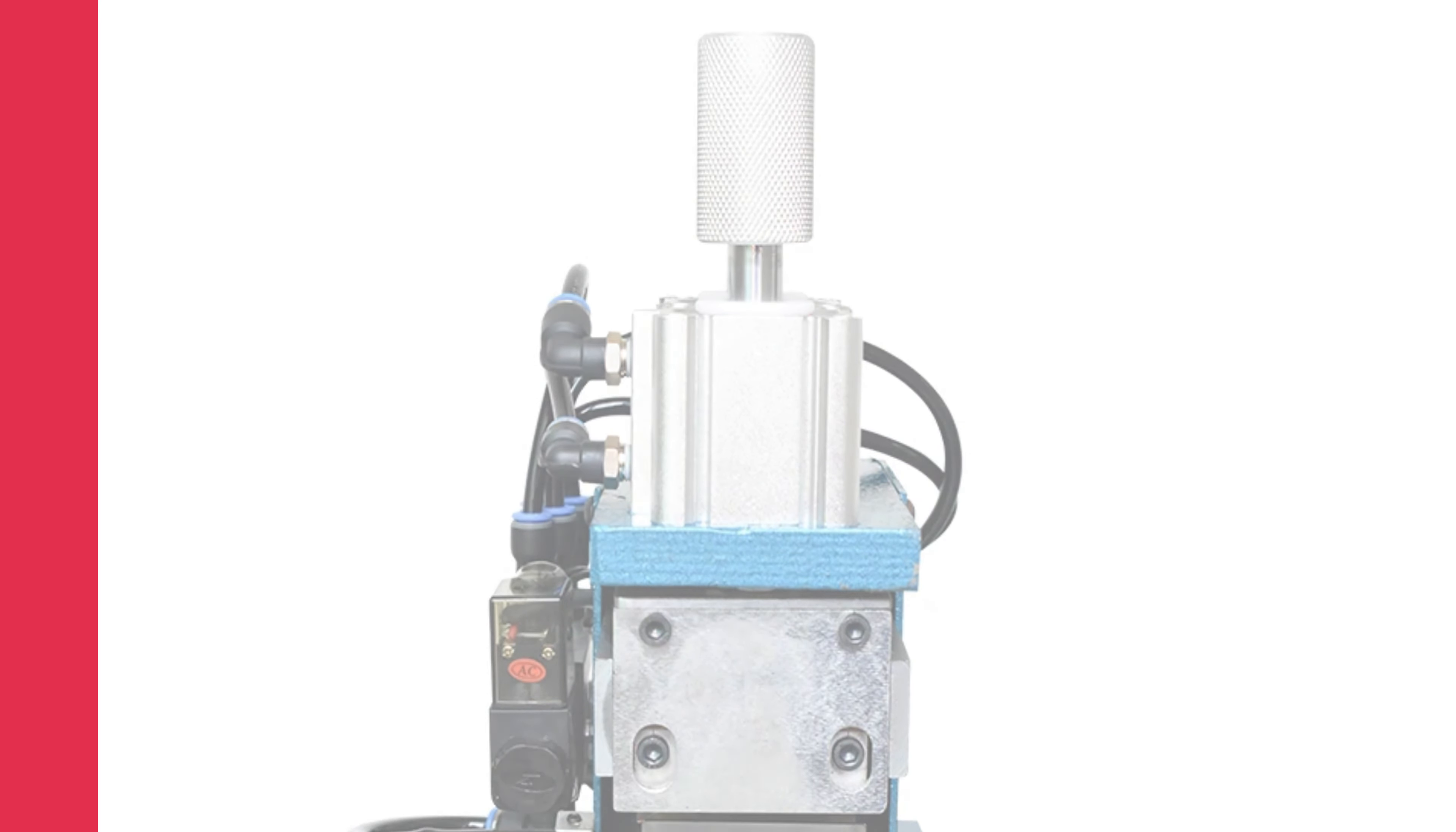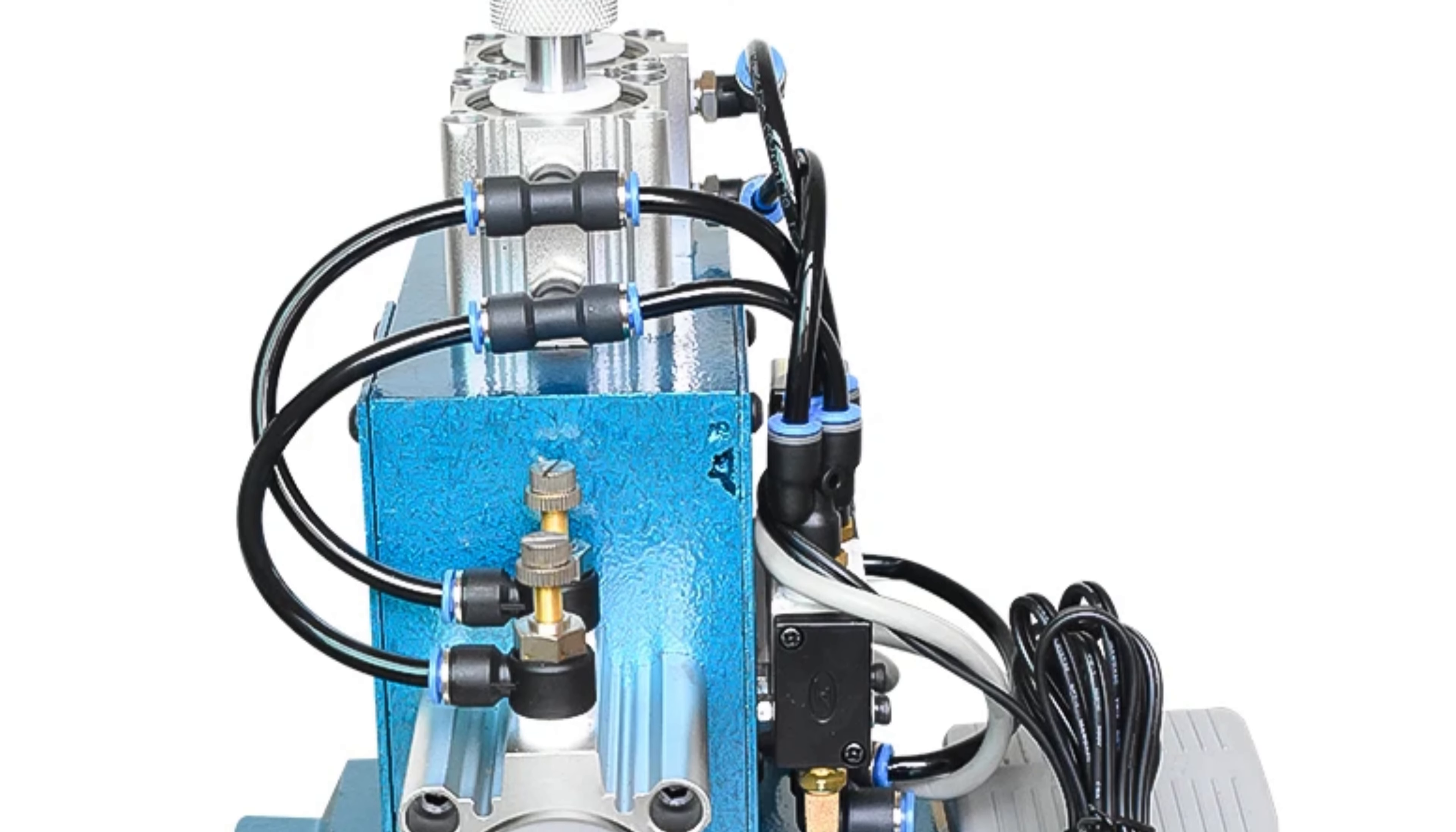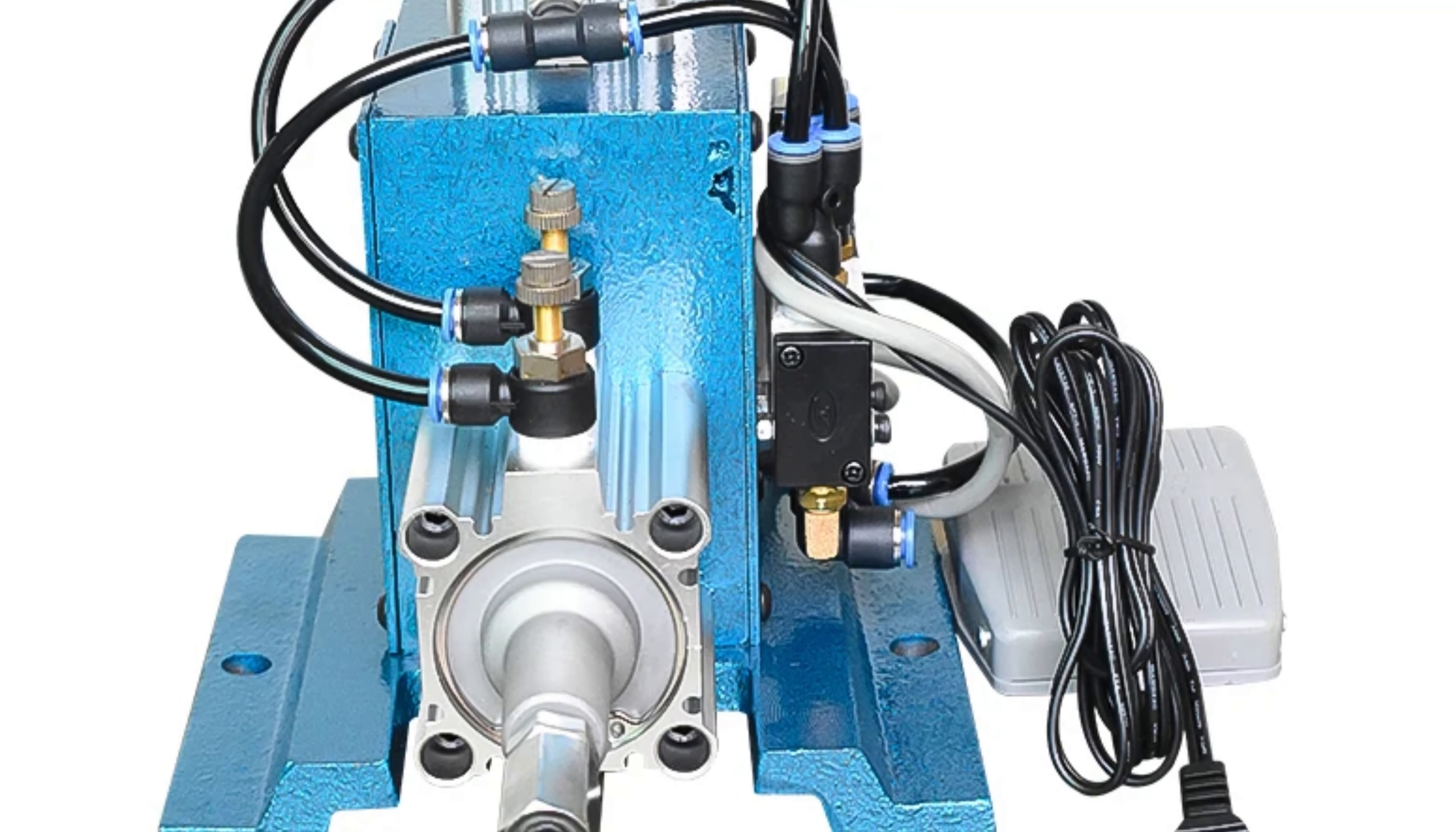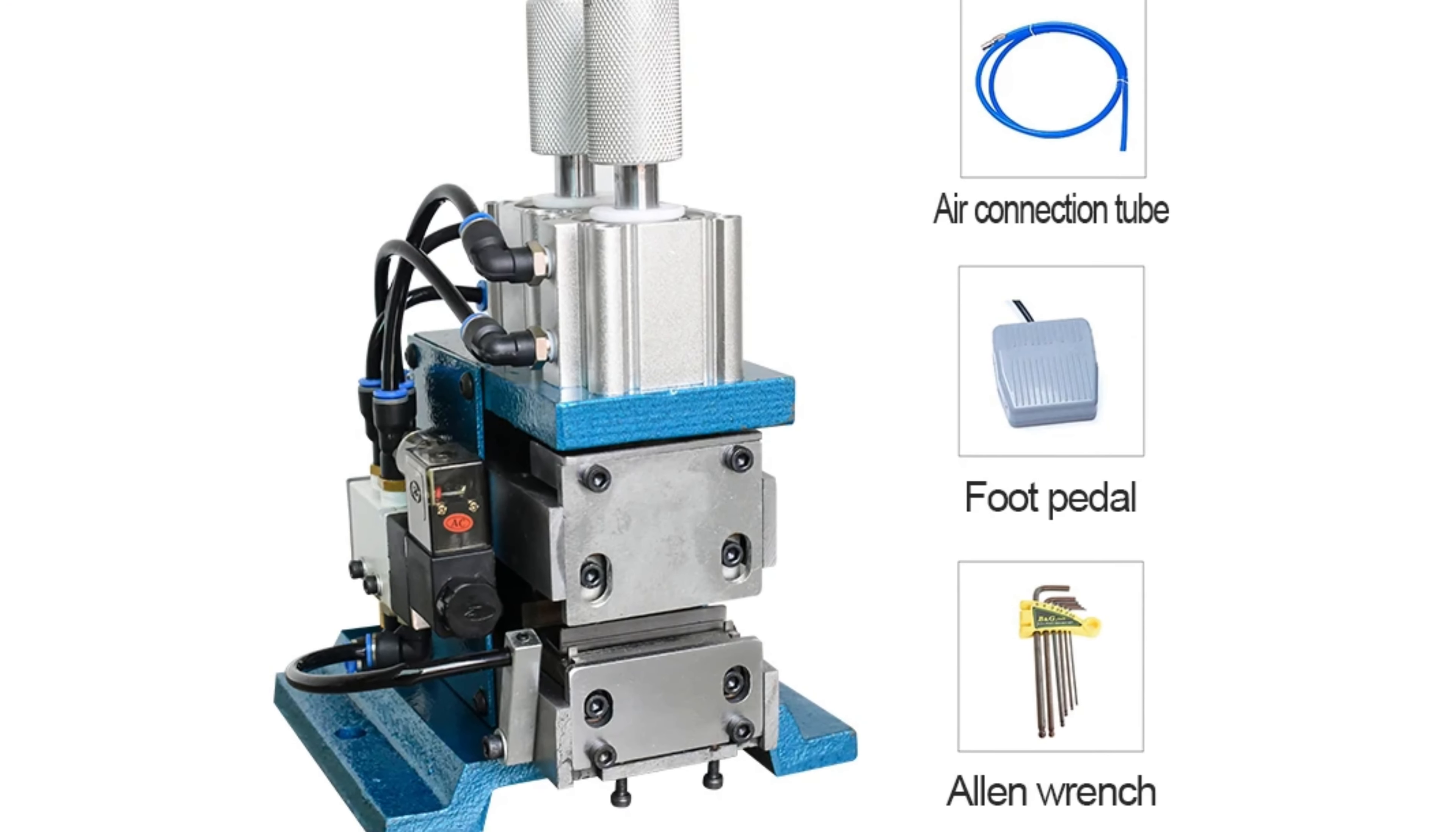The model number 3FN signifies its specific design for copper core wire stripping, providing a specialized solution for wire stripping needs. Originating from mainland China, the Borks 3FN reflects the quality and precision associated with electronic manufacturing.